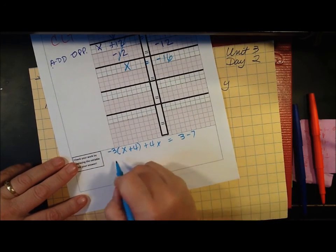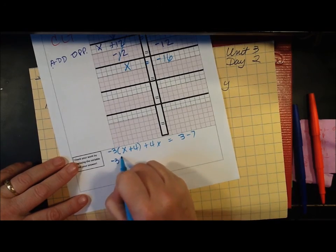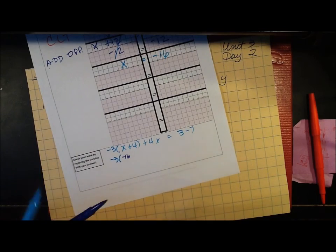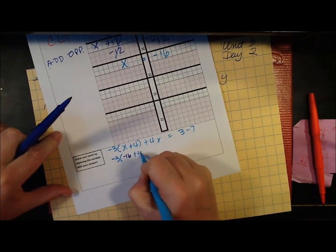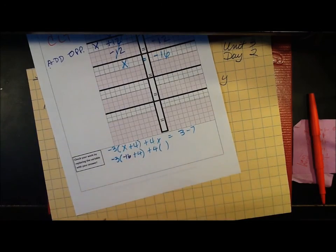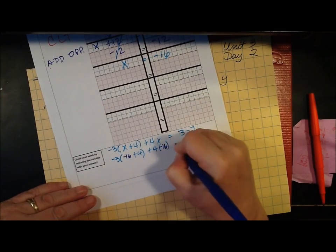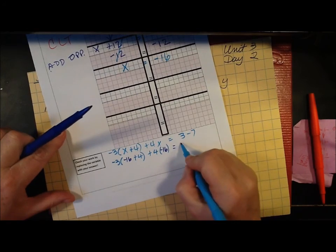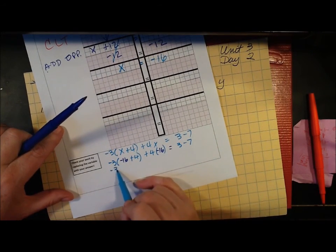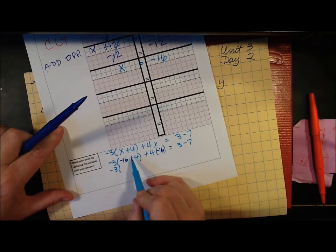So wherever I see an x I'm going to plug in negative 16. Negative 3 times negative 16 plus 4 plus 4 times negative 16 equals 3 minus 7. Negative 3 times do the parentheses first.